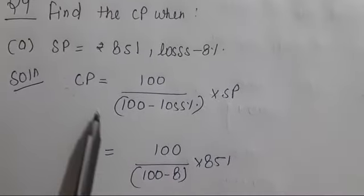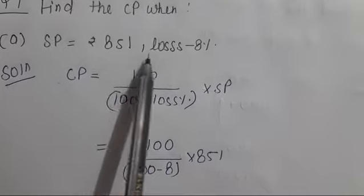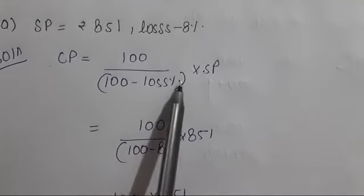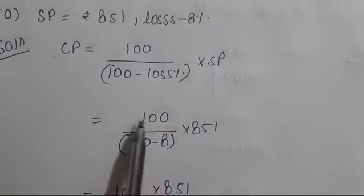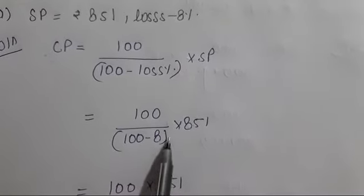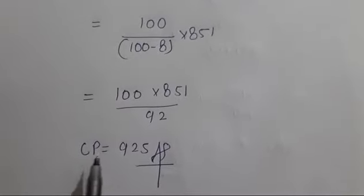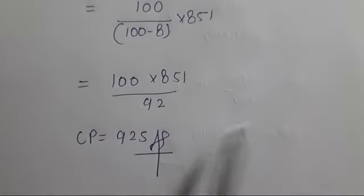Next question number 4. SP equals 851 and loss is 8 percent. CP equals 100 upon (100 minus loss percent) times SP. Equals 100 upon (100 minus 8) times 851. 100 times 851 divided by 92. CP equals 925 as your answer.